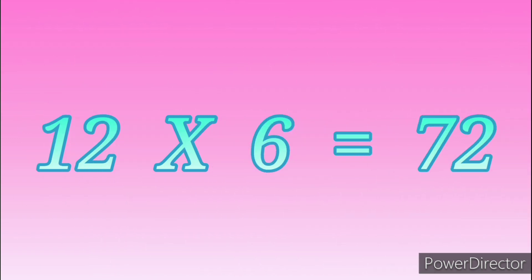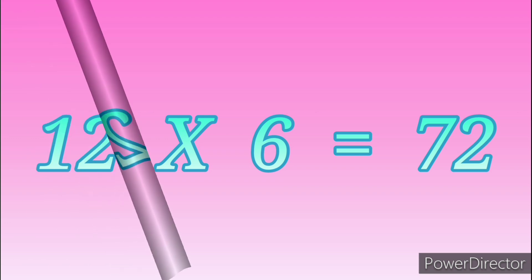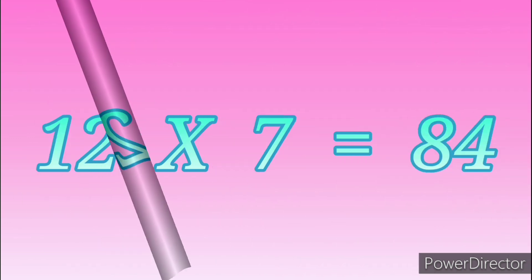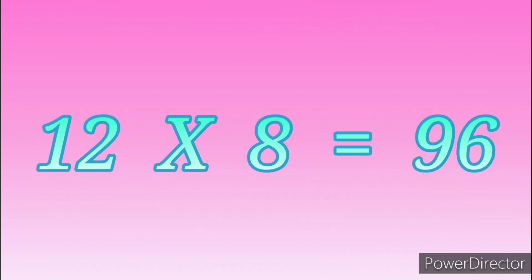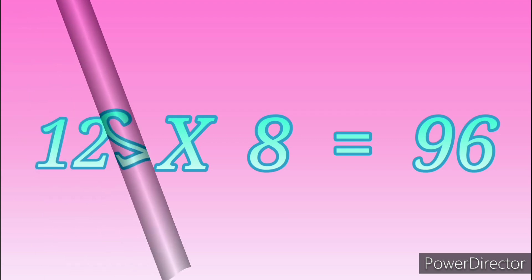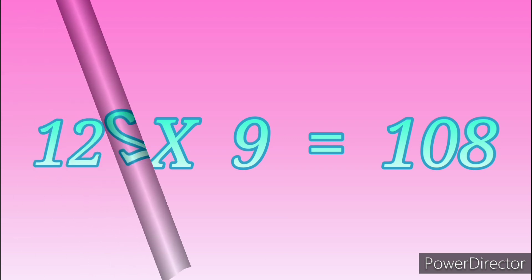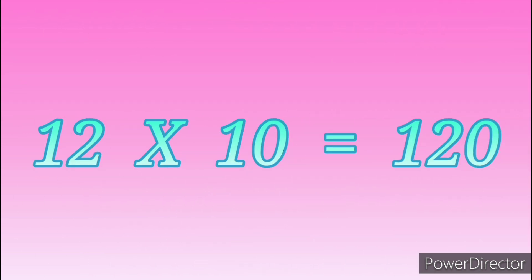Twelve sevens are eighty-four. Twelve eights are ninety-six. Twelve nines are one hundred and eight. Twelve tens are one hundred and twenty.